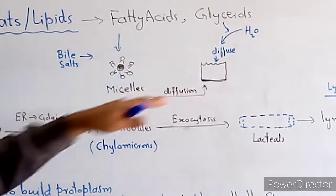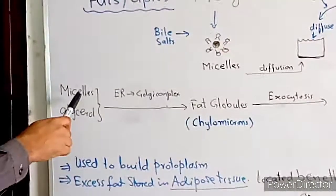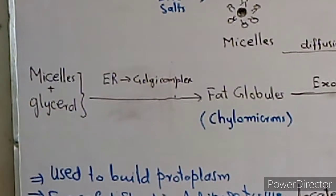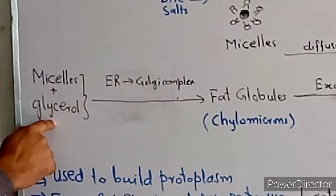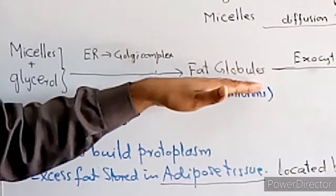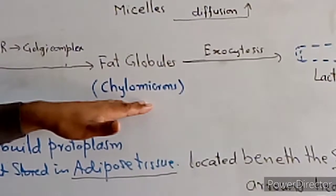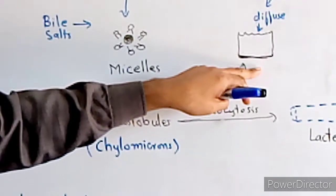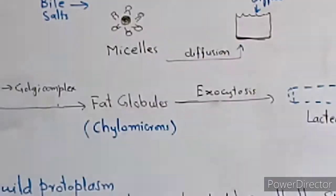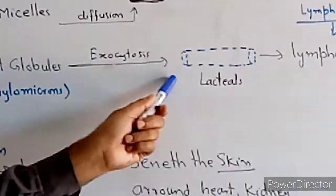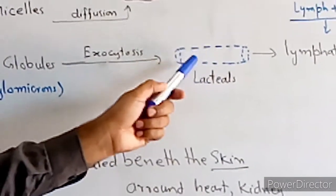Inside the epithelial cells, fatty acids and glycerol are reassembled in the endoplasmic reticulum. They are then packaged and transported out of the epithelial cells via exocytosis into the next structure.